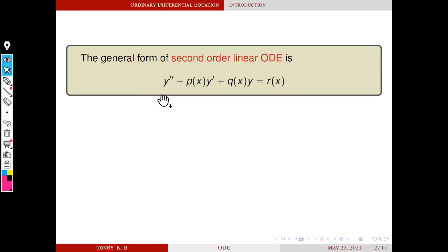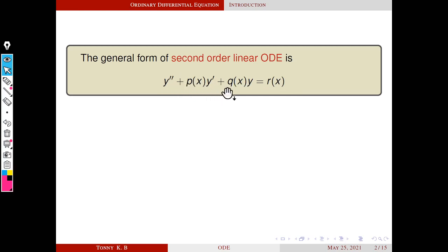First, we are going to discuss the second-order linear ordinary differential equation. This is the general form: y double dash plus p(x) into y dash plus q(x) into y equals r(x), where p(x), q(x), and r(x) are functions of x — or maybe constants, maybe numbers.